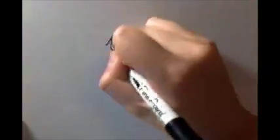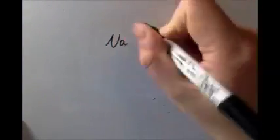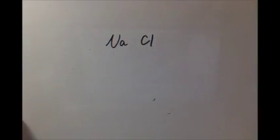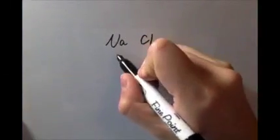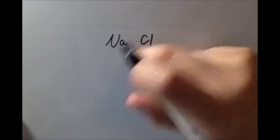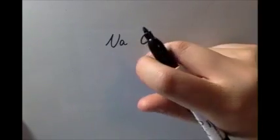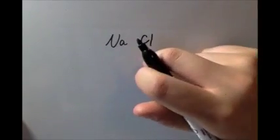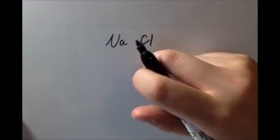So we start with ionic bonds. Let's take sodium chloride as an example. In the ionic bond, there will be electron transferring from metal to the nonmetal. In this case, sodium will be the metal and chlorine will be the nonmetal. First, we need to look at the valence electrons that each element has.